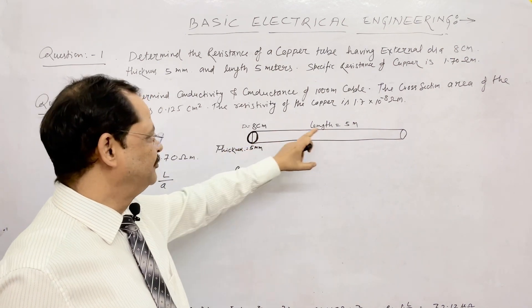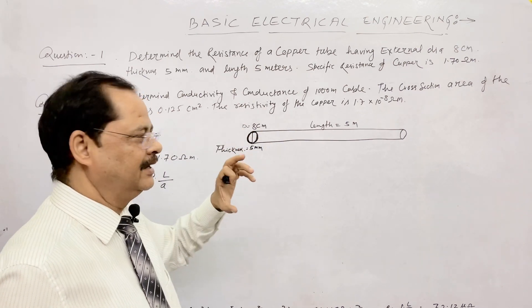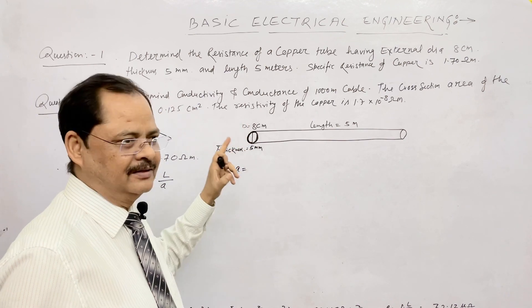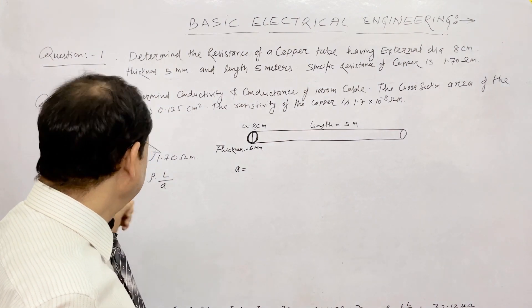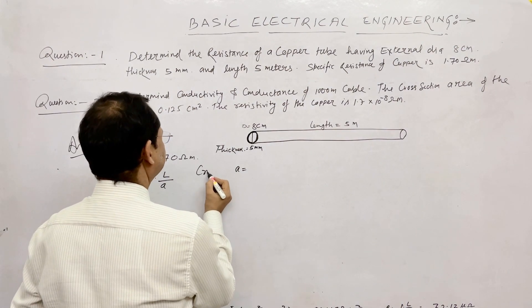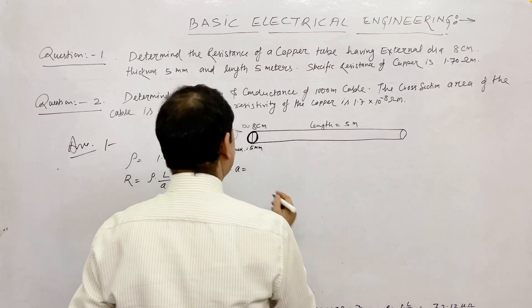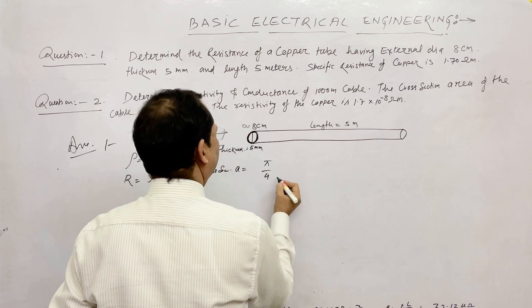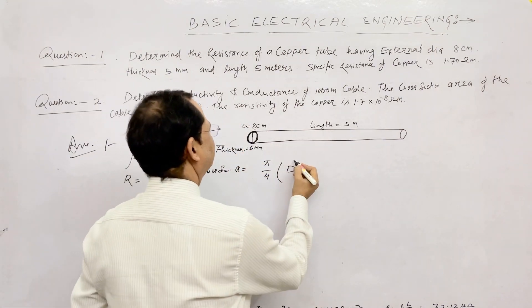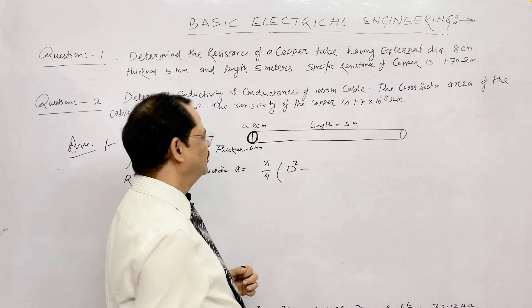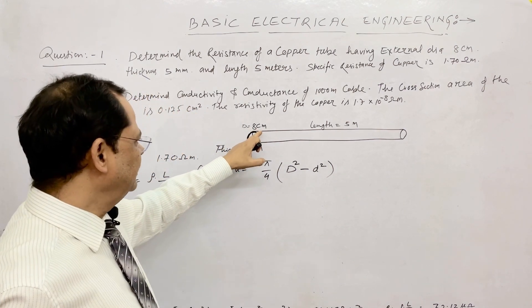The length is 5 meters, the external diameter is 8 cm, and the thickness is 5 mm. There are two layers — external and internal — so we find how much material is used. The cross-section area A equals pi by 4 into (D² minus d²), where D is the external diameter and d is the internal diameter.